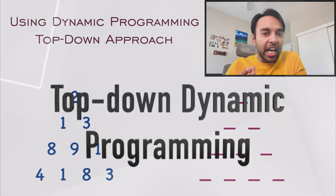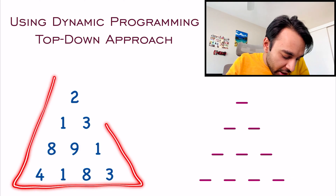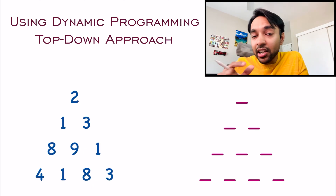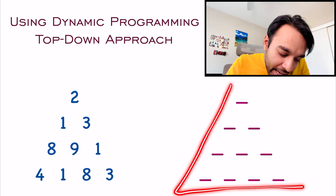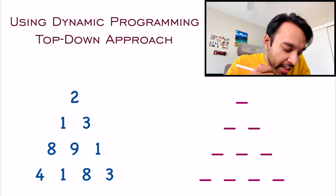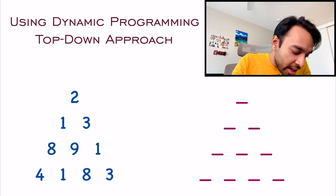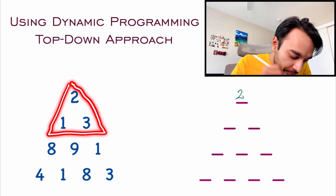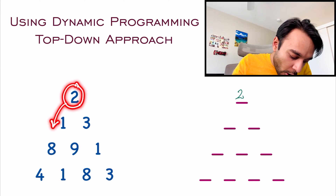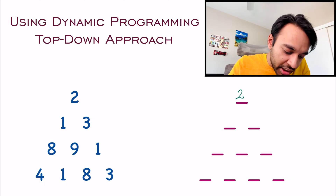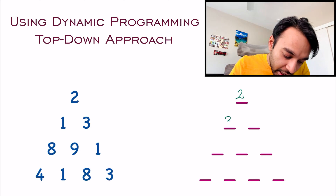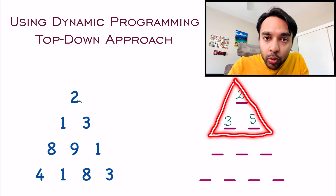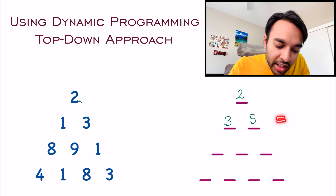Now let us see how to actually apply dynamic programming. Taking the second example triangle, we create an empty memoization array to store results at each level. If the triangle only had 1 level, the minimum sum is 2. With 2 levels, from element 2 we can go to 1 or 3, giving values 2+1=3 or 2+3=5. So for a triangle of height 2, scanning these two values, 3 is the minimum sum.